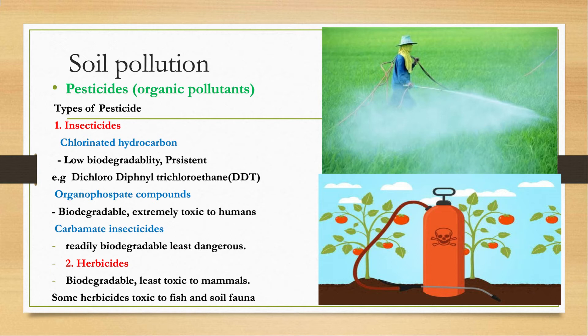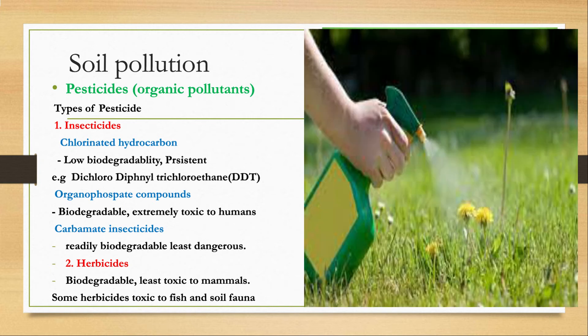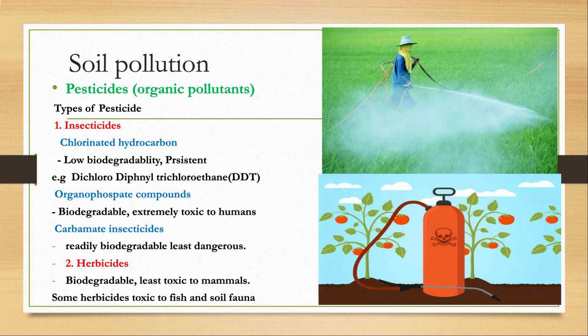Herbicides are a type of pesticide used to control weeds. Herbicides are biodegradable and least toxic to mammals, but some herbicides are very toxic to soil fauna.